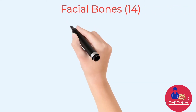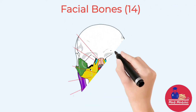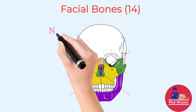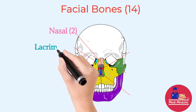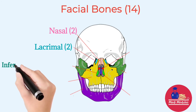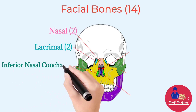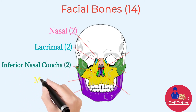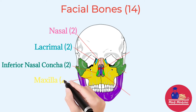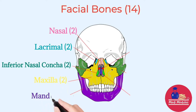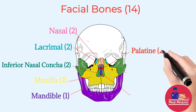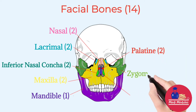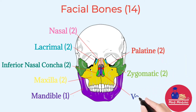Let's see our facial bones. We have a total of 14 facial bones. Starting with nasal, we have 2 nasal bones, 2 lacrimal bones, 2 inferior nasal concha, 2 maxilla bones, 1 mandible which is shown in purple color, 2 palatine bones, 2 zygomatic bones, and 1 vomer bone.